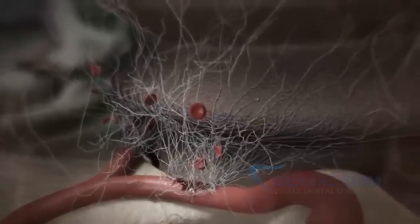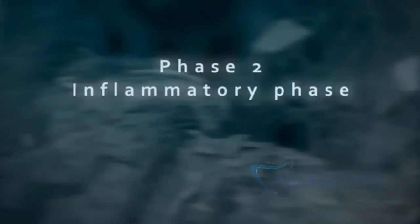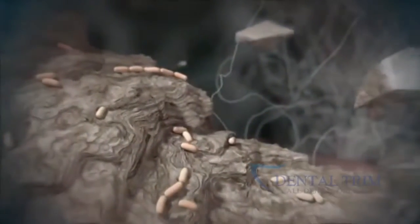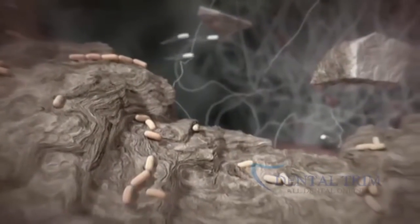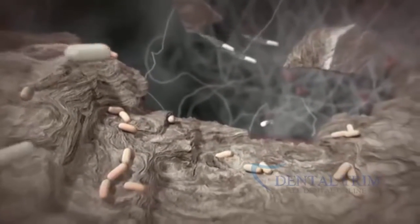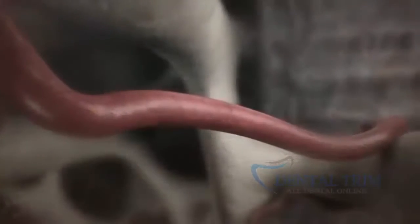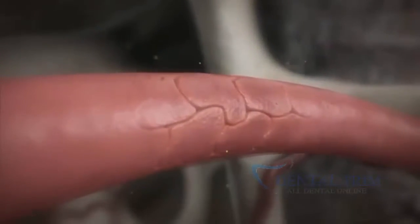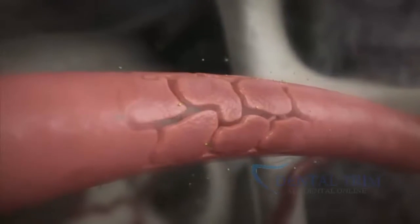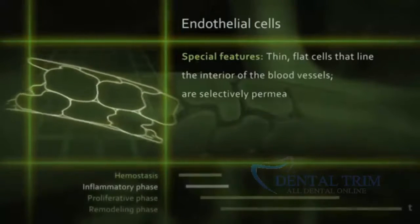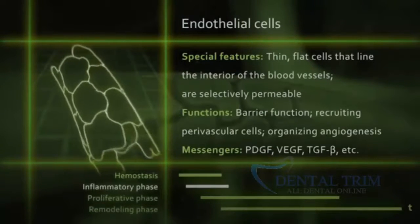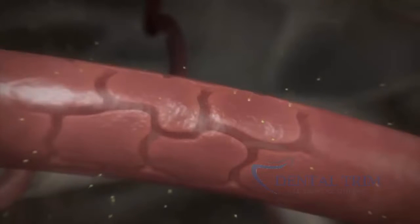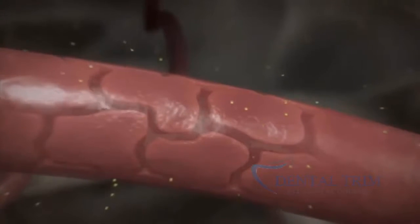This blood clot has tremendous importance as a provisional matrix for subsequent bone healing processes on the implant surface. During the early stages of healing, immune cells clean the wound of fine bone chips, tissue debris, and oral bacteria remaining after the surgical procedure. In a first step, bradykinin from the platelets increases blood vessel permeability, causing endothelial cells to move apart very slightly.